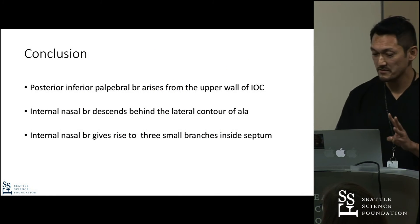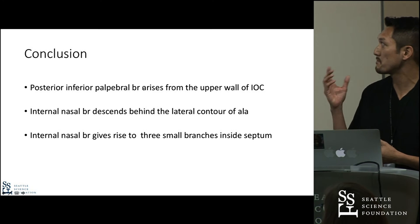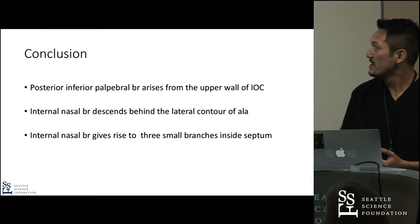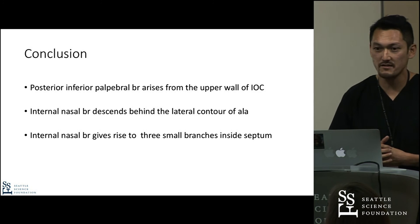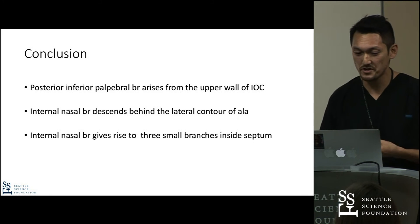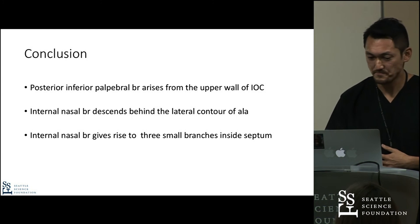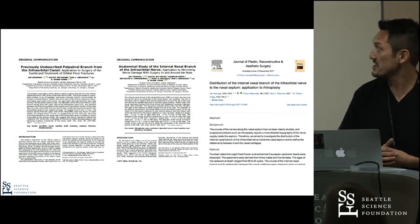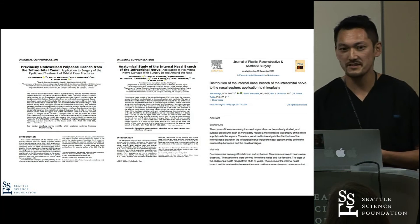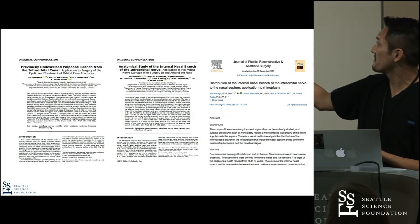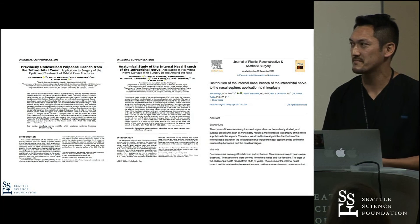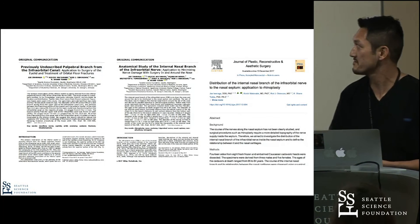I talked about three different studies. The conclusion is: the posterior inferior palpebral branch, which we found and which has never been described, arises from the upper wall of the infraorbital canal. The internal nasal branch descends just behind the lateral contour of the ala. And the internal nasal branch gives rise to three branches: anterior, middle, and posterior inferior septum branches. These are all recently published — two of them in the Clinical Anatomy journal, of which Dr. Tubbs is editor-in-chief, and the other one published in the journal of plastic and reconstructive aesthetic surgery, accepted just a couple of weeks ago.